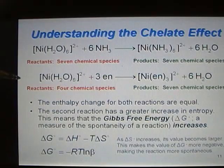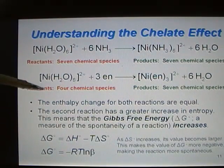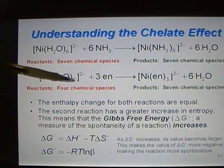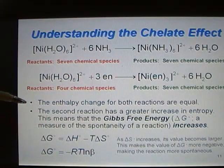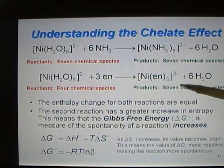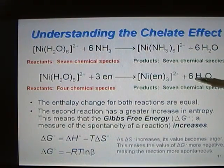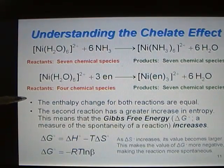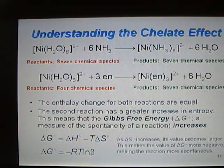In the second reaction, on the reactant side, there are four chemical species: the Ni(H₂O)₆²⁺ and three ethylenediamine ligands. When this reaction occurs, you have an increase in the number of product molecules compared to the reactant molecules — you form Ni(en)₃²⁺ and six H₂O's. The enthalpy change for both reactions are almost identical; however, the second reaction has a greater increase in entropy.